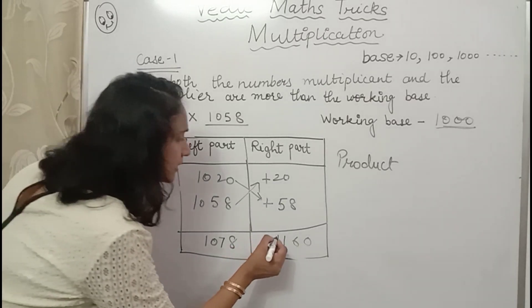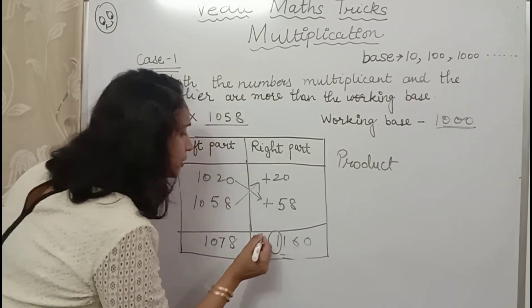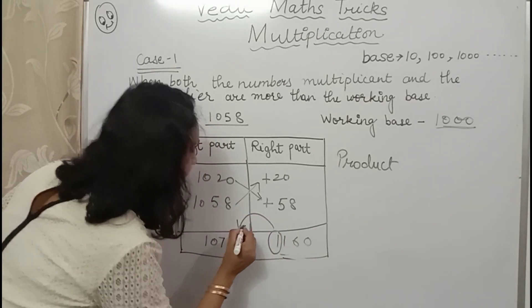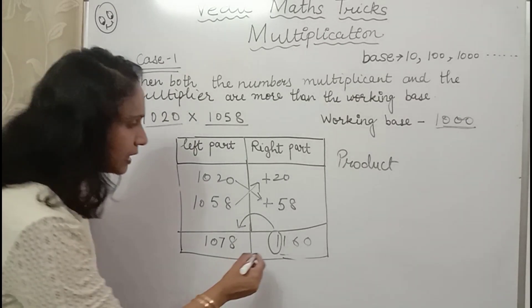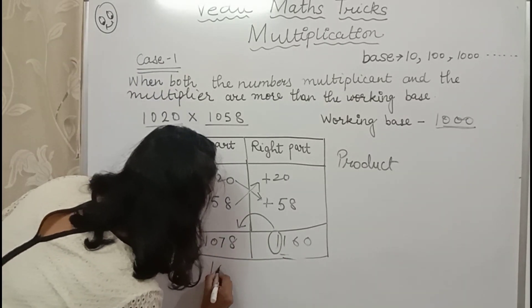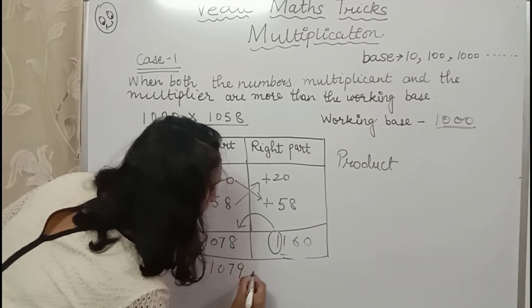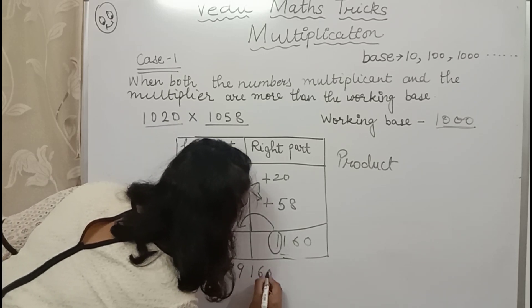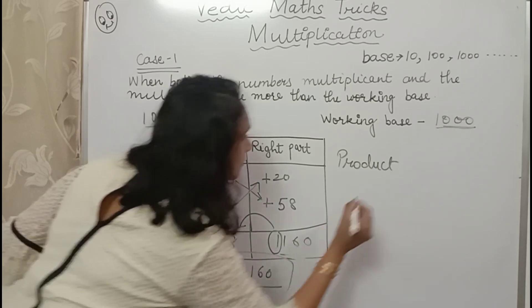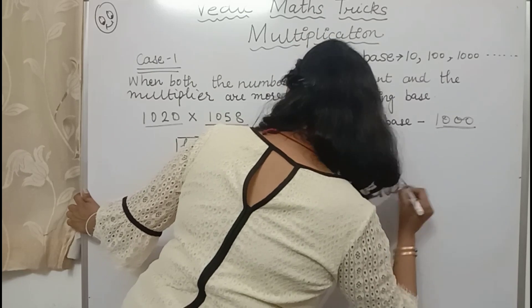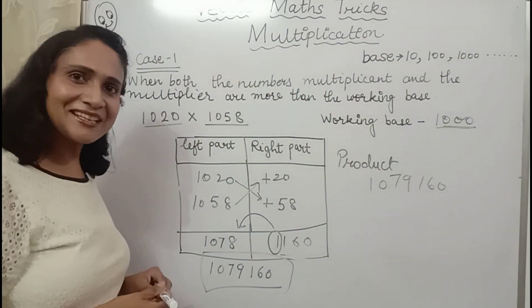So what will I do? I will give the 1 extra digit to the left part. What I will do? I will give the extra digit to the left part. 1, 0, 7, 9. And 3 digits from here. So this is your product. Product is 1079160. So easy. Now let's see this sum.